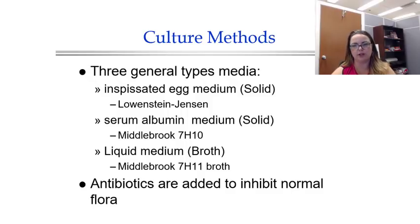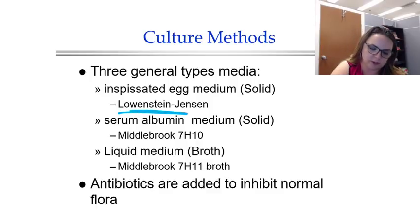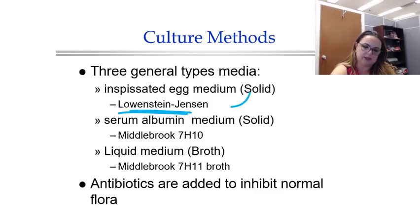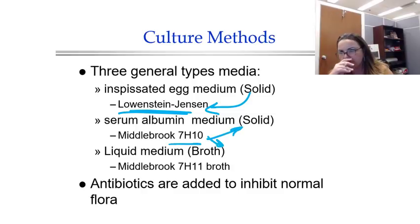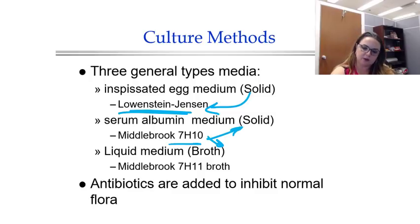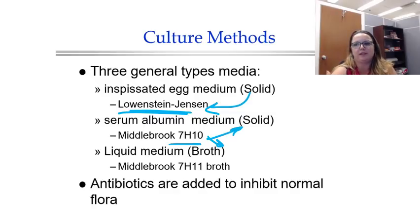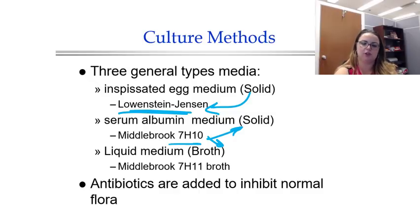TB are highly fastidious organisms requiring very specific media — they're kind of divas. The original media used was Lowenstein-Jensen, basically a solid egg-based media where the albumin is really important. Middlebrook agar is available in either solid or broth form — both are albumin-based. The best culture media to use is actually the liquid Middlebrook broth, which simulates the lung parenchyma, so the TB actually feels at home. If you're a fan of Sketchy, they only mention Lowenstein-Jensen, but Middlebrook is actually the better, faster option. You also need to first decontaminate the sample, and these media will have antibiotics added to inhibit growth of normal oral flora.